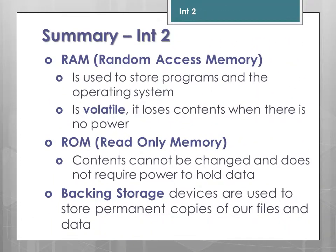To summarise: RAM is random access memory, used to store programs and the operating system — it is volatile and loses its contents when there is no power. ROM stands for read only memory; its contents cannot be changed once set, but it does not require constant power to hold data. Backing storage devices are used to store permanent copies of files and data.